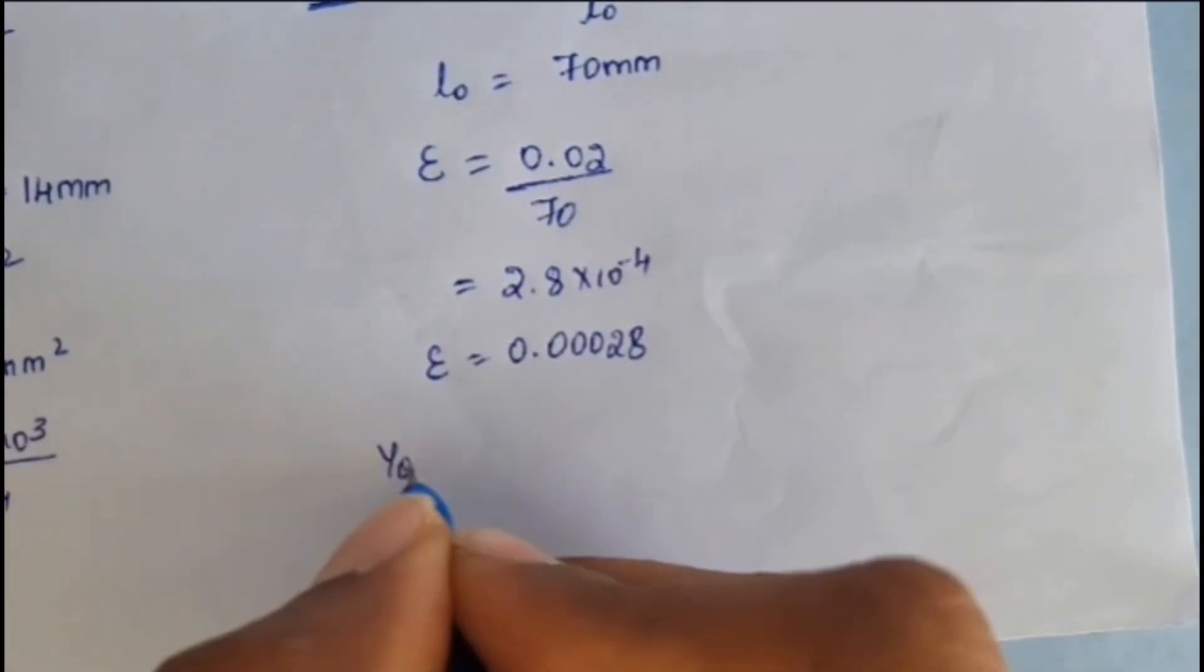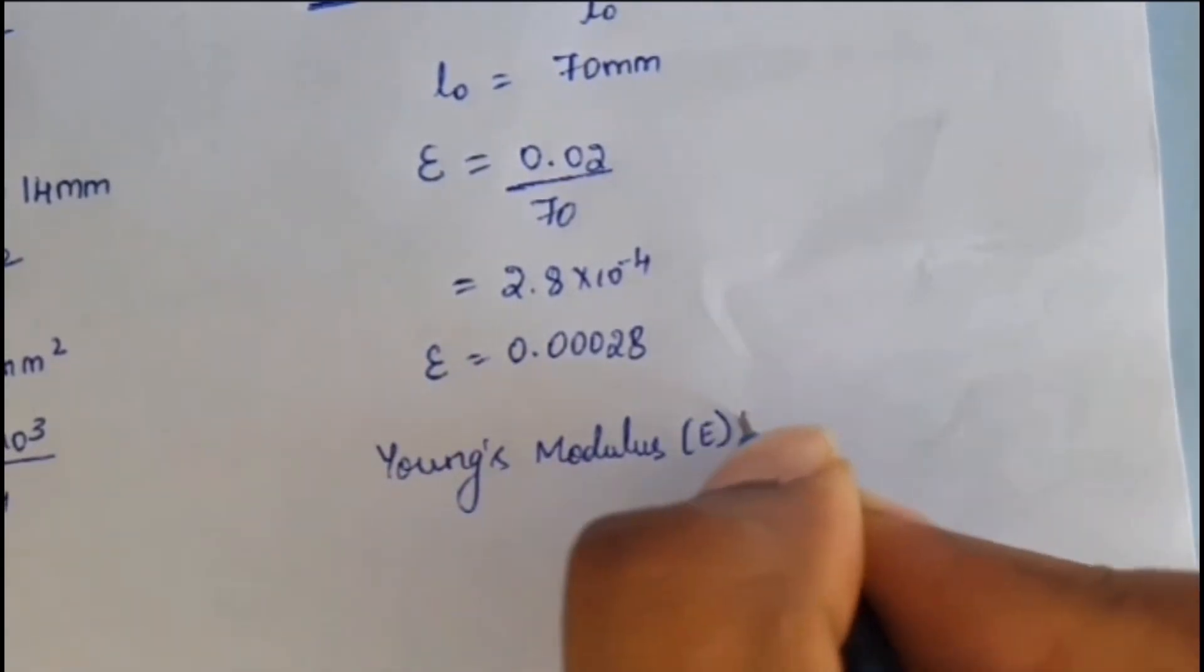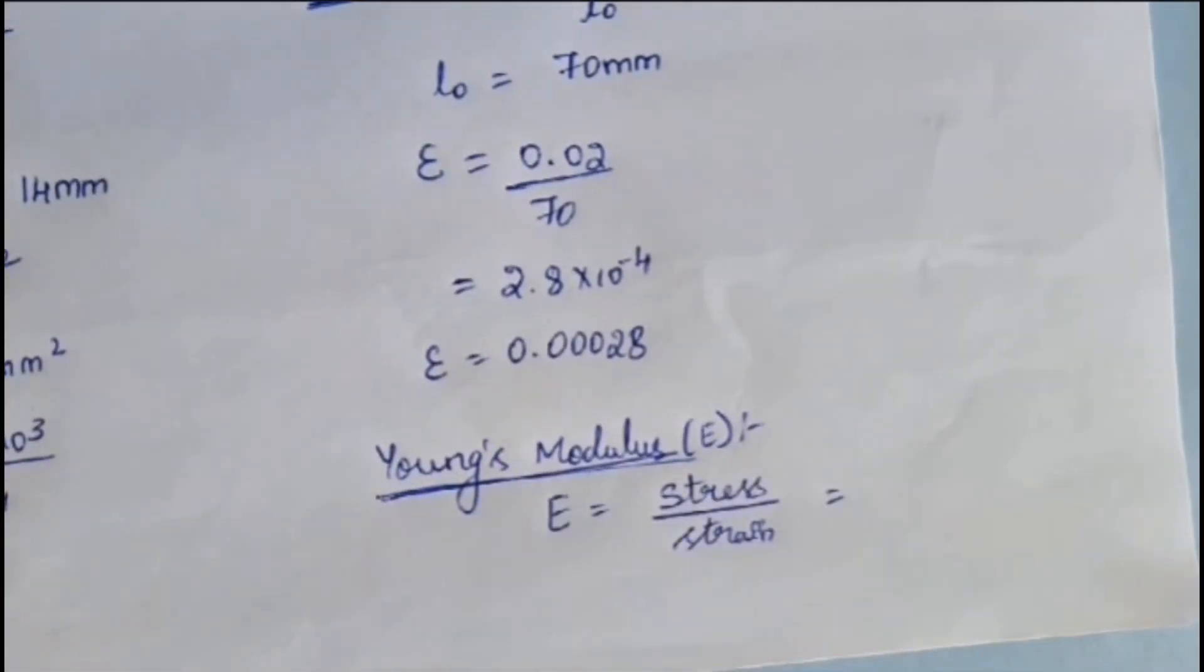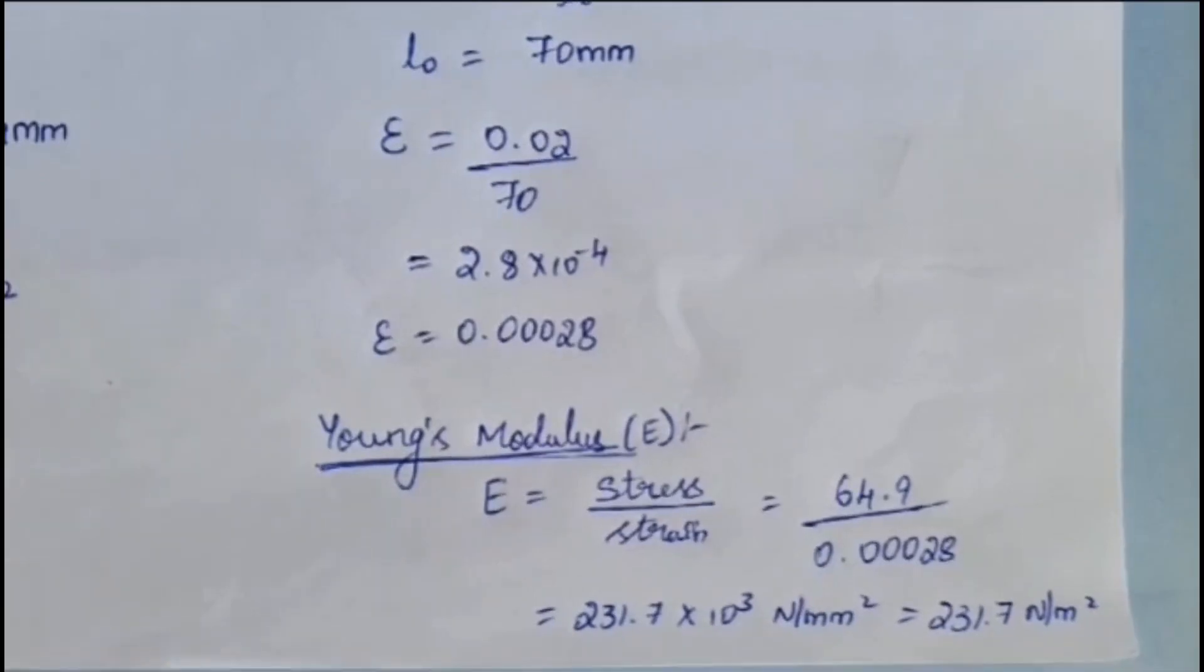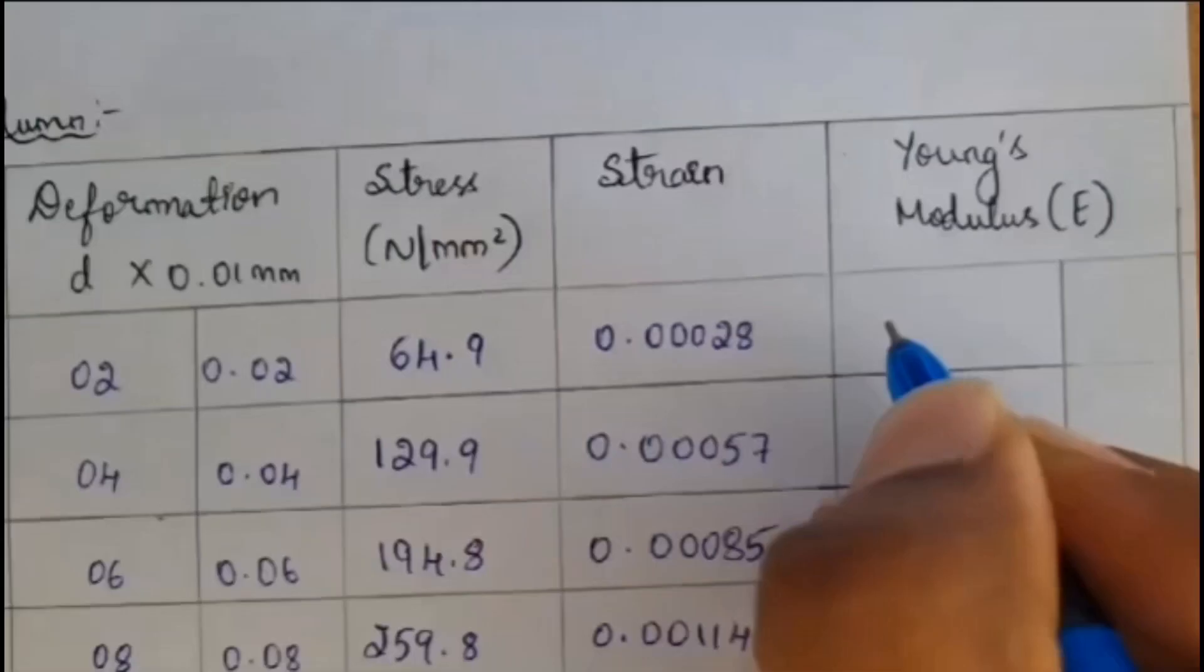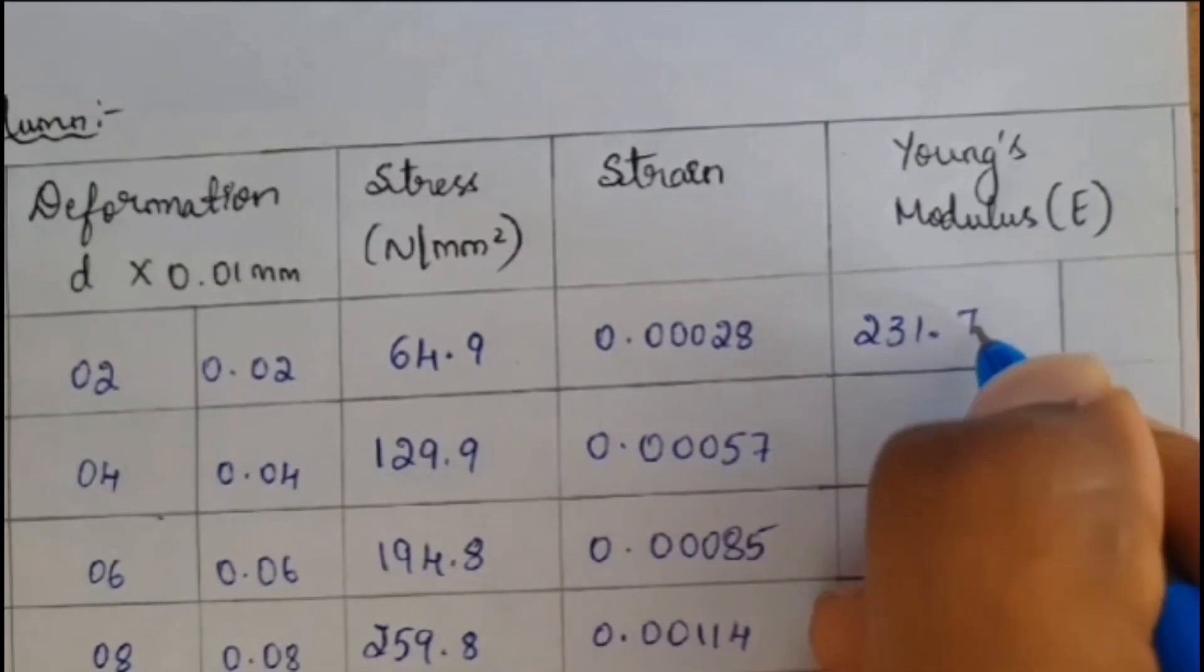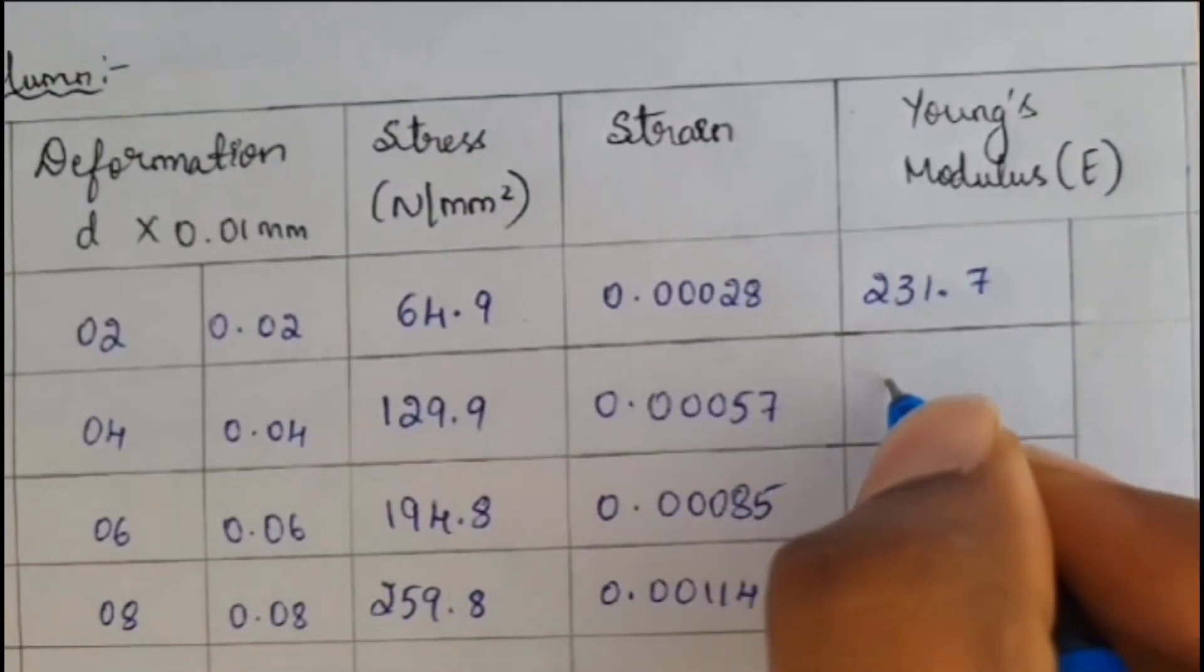Next I have to find the value of Young's modulus. That is modulus of elasticity, capital E. For that formula is equal to, capital E is equal to stress by strain. Stress also we have been calculated. Strain also we have been calculated. We have to divide each other.